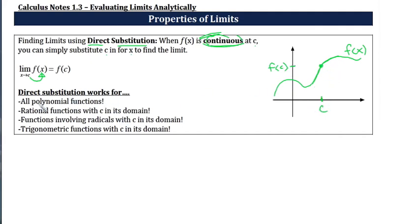Direct substitution is going to work for all polynomial functions. It works for all rational functions as long as c is in its domain — it's a good thing we talked about finding x values in a specific domain. It also works for functions that involve radicals as long as c is in its domain, and for trigonometric functions with c in its domain.